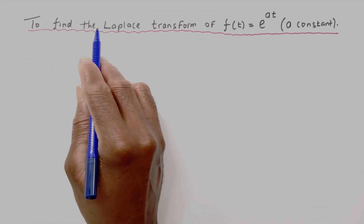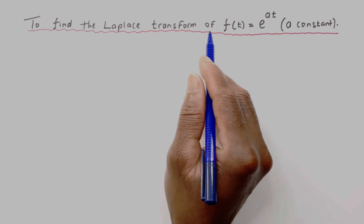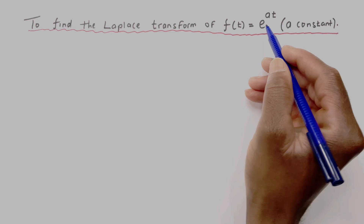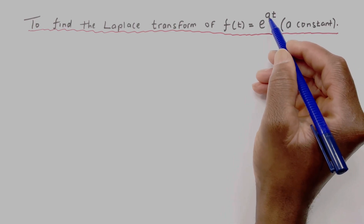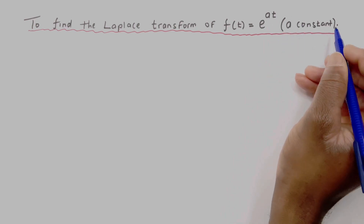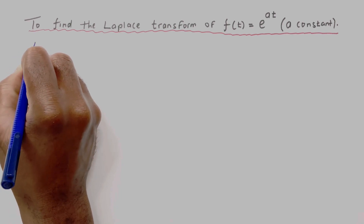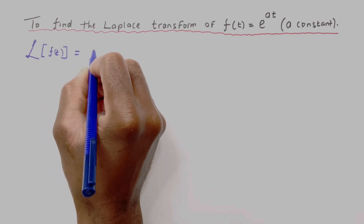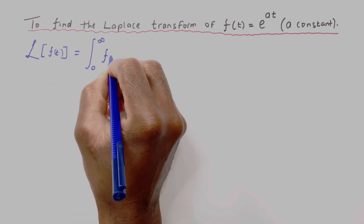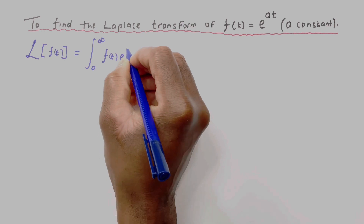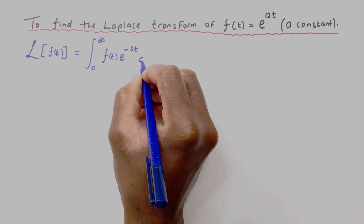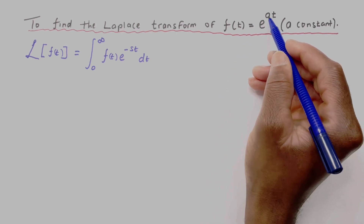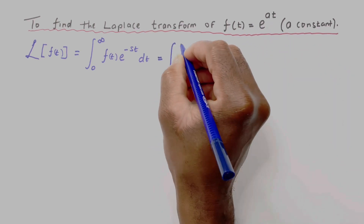We want to find the Laplace transform of a function f(t), where f(t) equals e to the power at, where a is a constant. First, we write the Laplace transform as a function of s, which equals the integral from zero to infinity of f(t) times e to the power minus st dt.